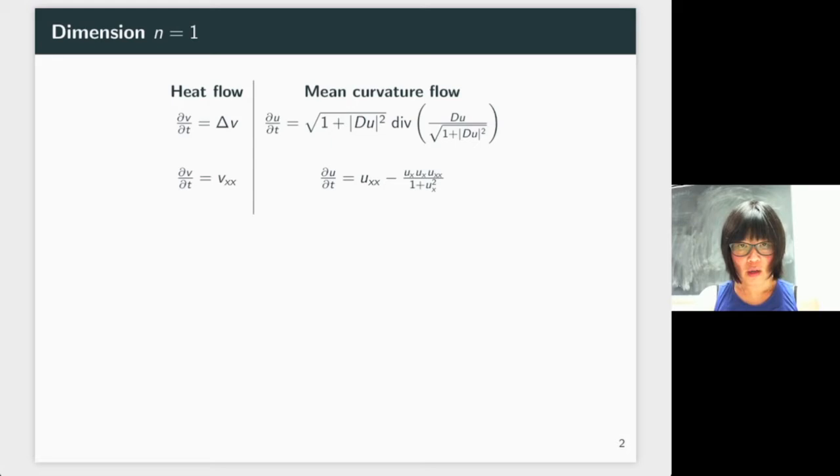What is interesting is that you can write the last term as the derivative with respect to x of some potential. So this is particular to dimension one. The mean curvature flow is written as ∂U/∂t = Uₓₓ + Fₓ, the derivative with respect to x.